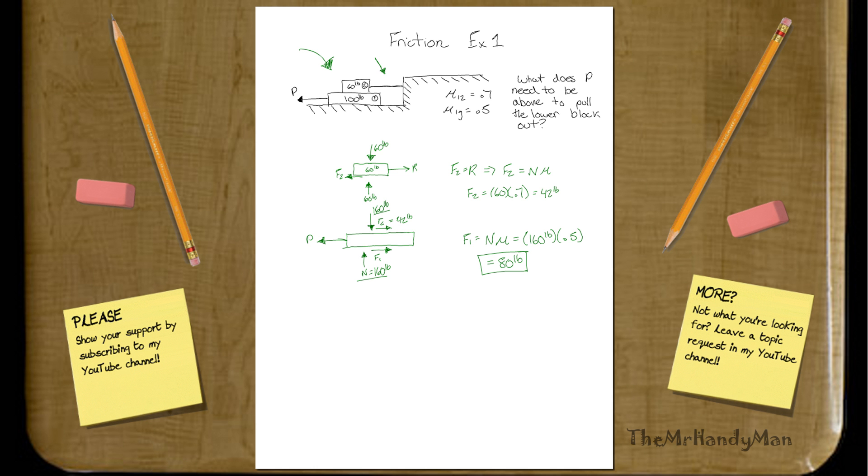If we look at the equilibrium state in this, and this is just a one-dimensional problem, we know that the sum of Fx is equal to 0. Thus, we know that minus P plus F2 plus F1 should equal 0. So another way of writing that would be P equals F1 plus F2.